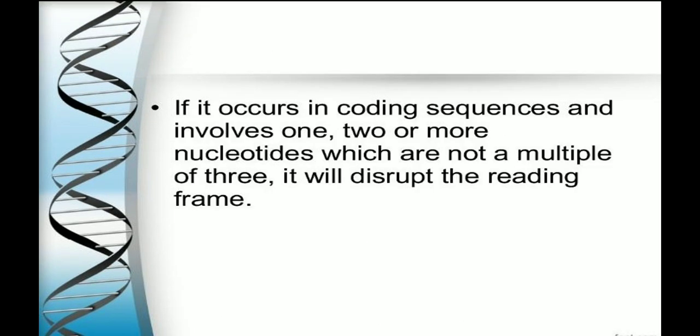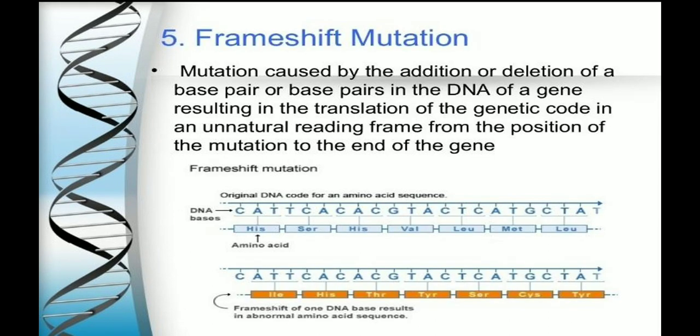If insertion or deletion occurs in a coding sequence and involves one, two, or more nucleotides that are not a multiple of three, it will disturb the reading frame. This results in a frameshift mutation, creating an unnatural reading frame from the position of the mutation to the end of the gene.